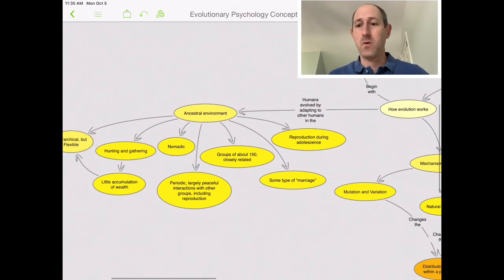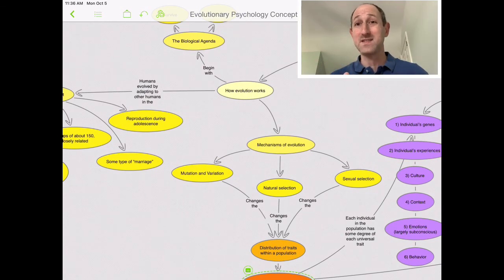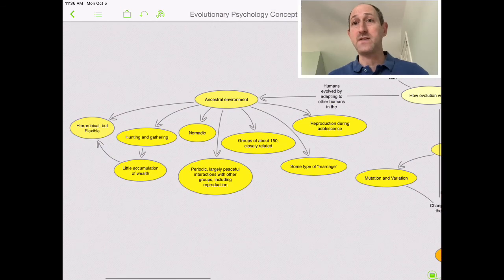In terms of how evolution worked, humans evolved by adapting to other humans. Not that we didn't have to adapt to the environment. Part of natural selection for us is competing with other humans. And it's because we are a social species.